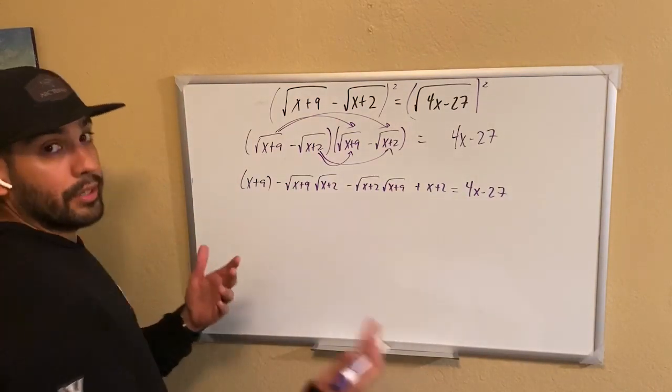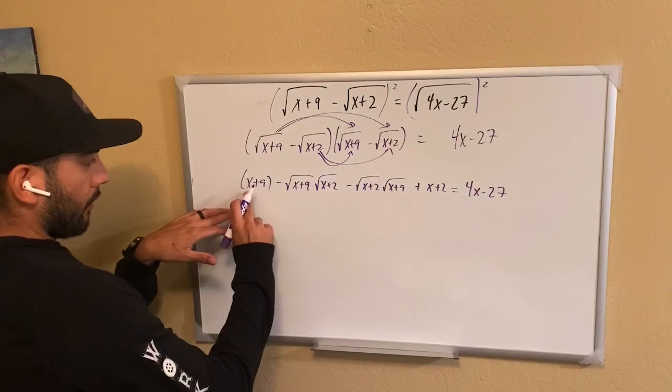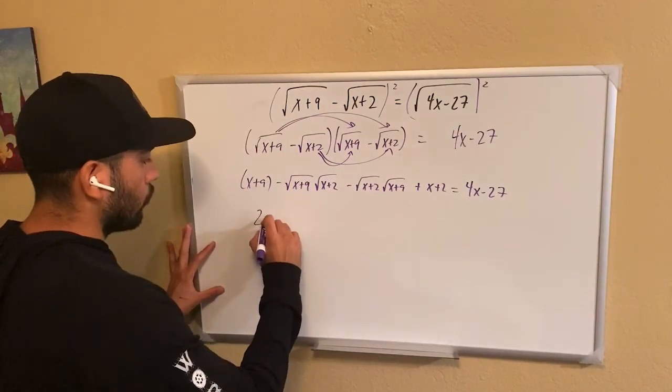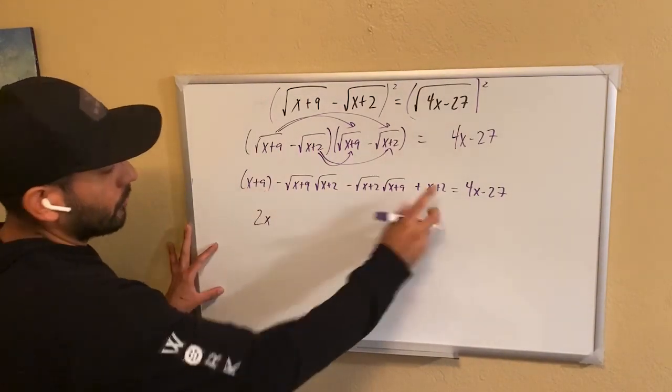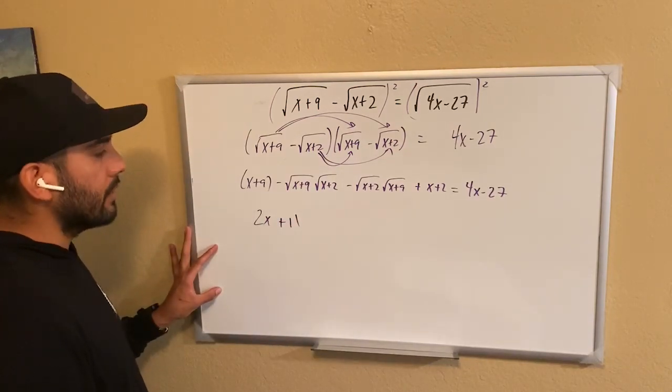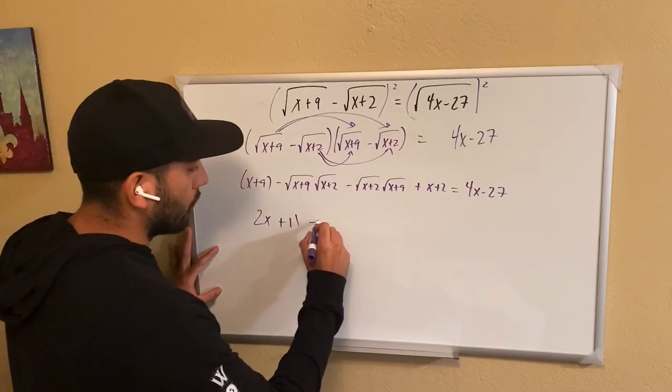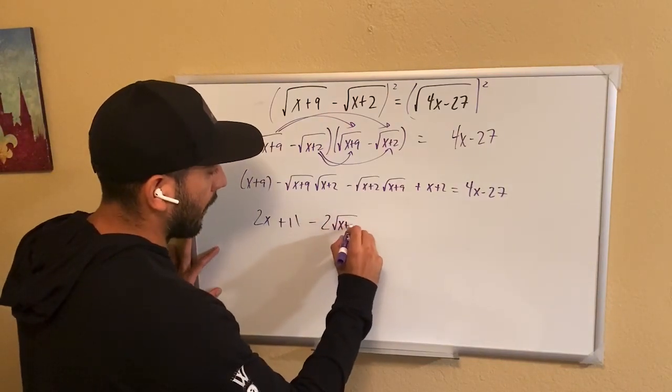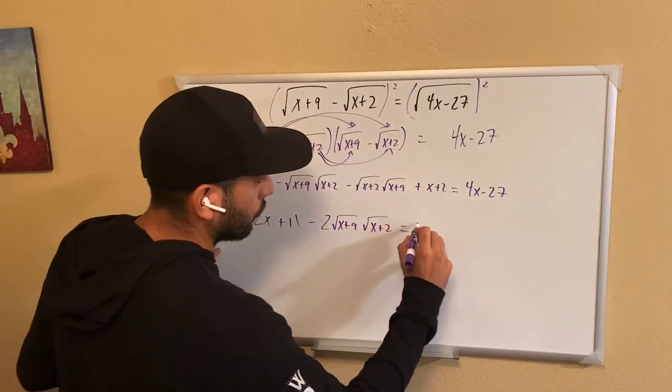Now what I'm going to do is I'm going to combine the like terms. And notice that there's an x here and an x there. That becomes 2x. The 9 and the 2 can become 11. And these two are the same values, so I'm just going to combine them, so that means that I have two of the same like terms.